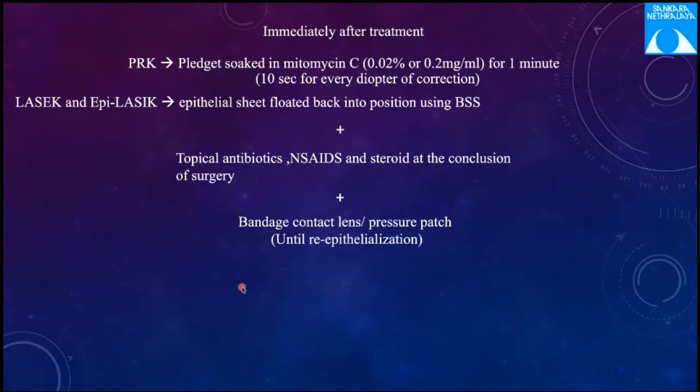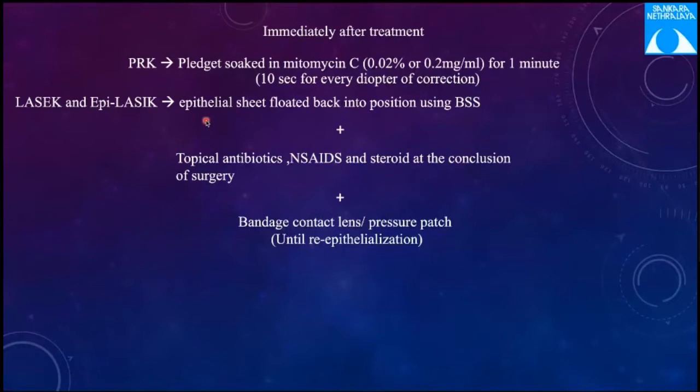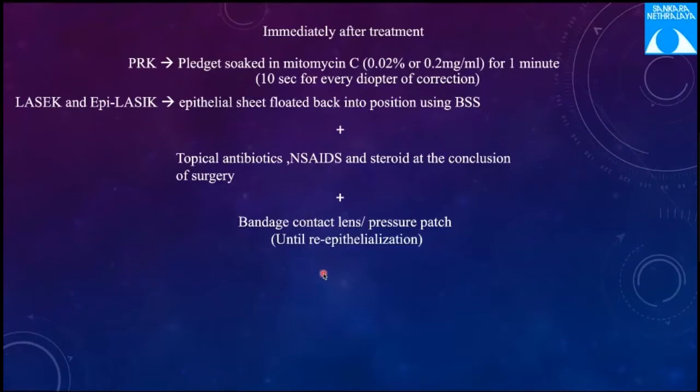Before surface ablation treatment, the stromal bed must be free of any epithelium to prevent irregular astigmatism. Excimer laser is applied; immediately after PRK, a pledget soaked in 0.02% mitomycin C (2.2 mg/mL) is kept for one minute — roughly 10 seconds per diopter of correction. In LASEK and epiLASIK, the epithelial sheet is floated back using balanced salt solution. Topical antibiotics, NSAIDs, and steroids are applied at the conclusion of surgery, and a bandage contact lens (BCL) is placed — or a pressure patch if the patient is intolerant — until re-epithelialization occurs.